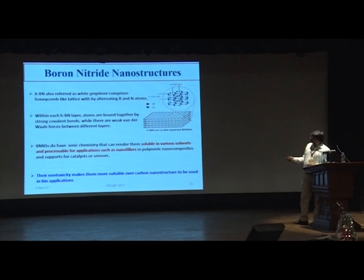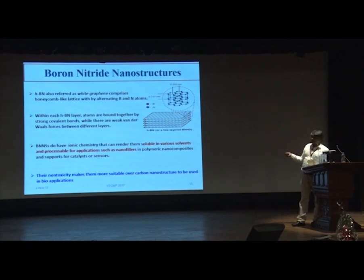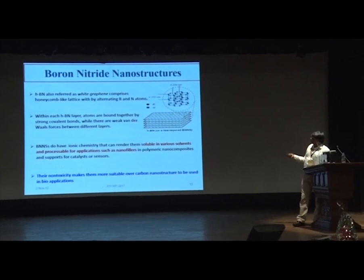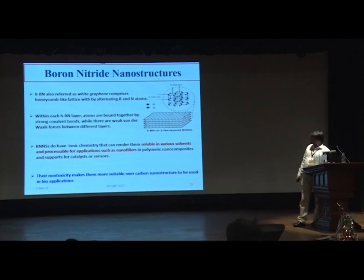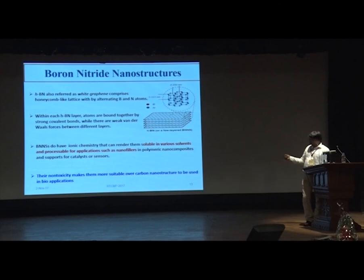The boron nitride sheet is in fact second to graphene in the discovery of two-dimensional structures and is referred to as 'white graphene.' Within each hexagonal boron nitride layer, atoms are bound by strong covalent bonds, while weak van der Waals forces exist between different layers. These boron nitride nanostructures have ionic chemistry that can render them soluble in various solvents and processable for applications such as nano-fillers in polymeric nanocomposites and supports for catalysts or sensors. Their non-toxicity makes them more suitable than carbon nanostructures for bio-applications.